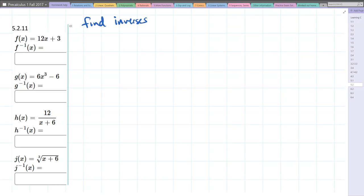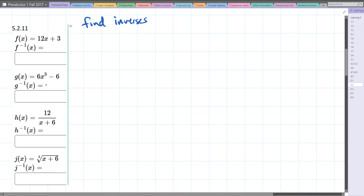We're going to be finding some inverses here. There are two steps to this process. The first step is swap x and y, and the second step is solve for y.